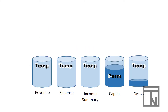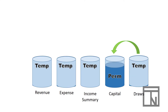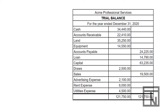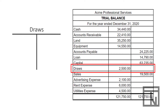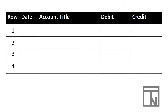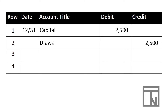Now that Income Summary is zeroed out, the only temporary account remaining is draws. Draws had a debit balance of $2,500 on the trial balance, so to empty it and make it zero, we credit draws for $2,500. The journal entry on 12/31 would debit capital for $2,500 and credit draws.